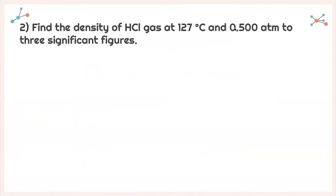For question 2, it asks: find the density of HCl gas at 127 degrees Celsius and 0.500 atmospheres to three significant figures. We're going to use the same equation: density is equal to pressure times molecular weight divided by R times temperature.